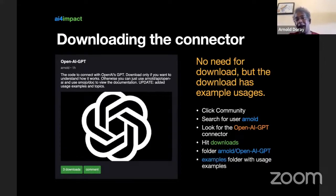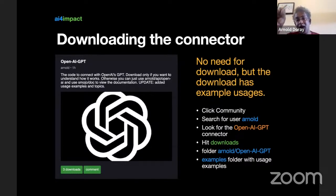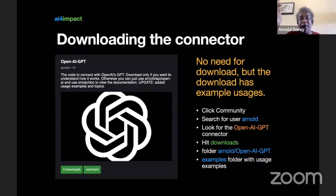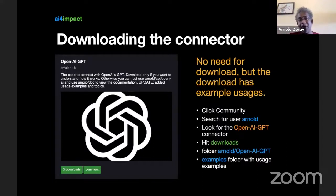It will be stored under your root folder slash arnold slash OpenAI GPT. Inside that there's an examples folder with a few examples. You don't really need the source code at all — you can just use my cloud. What the source code does is allow you to customize and publish your own connector. If you don't want to do that, you can still use the examples in the examples folder, which I'll show you how to use shortly.